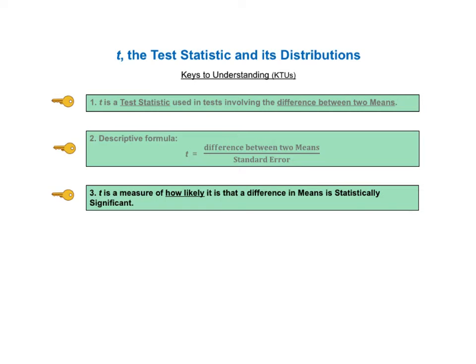The third key to understanding tells us that T is a measure of how likely it is that the difference between the two means is statistically significant.